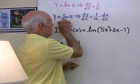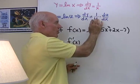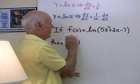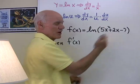So y equals logarithm of some argument here. The derivative is 1 over that argument times the derivative of the argument. So let's see how that works. Suppose f(x) is equal to natural log of 5x squared plus 2x minus 7.